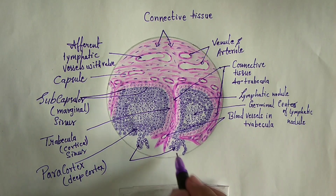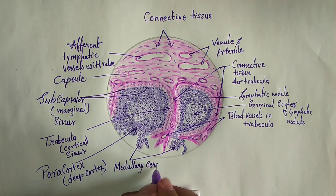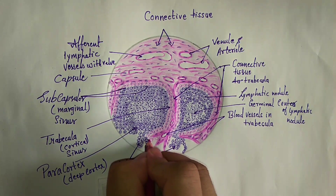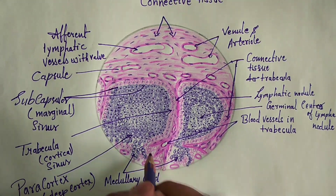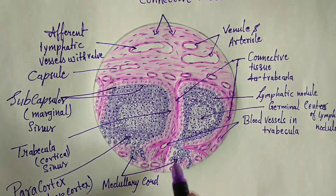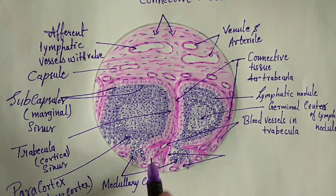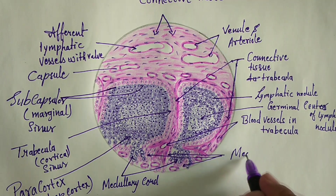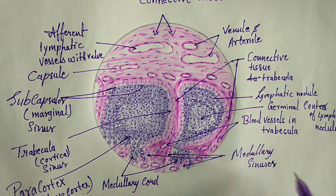Here is the medullary cord. This is the transitional area from the lymphatic nodules to the medullary cord of the lymph node medulla. Medullary cords are a network of reticular fibers filled with plasma cells, macrophages, and lymphocytes, separated by capillary-like channels. These channels contain numerous blood vessels and are called medullary sinuses.